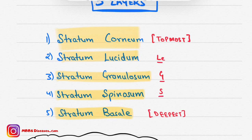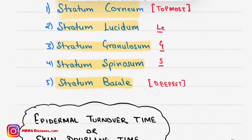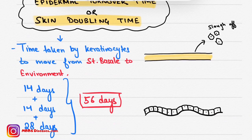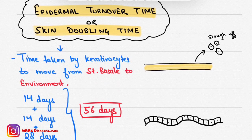Now coming to another part which is epidermal turnover time, also known as skin doubling time. Epidermal turnover time is the time taken by keratinocytes to move from stratum basale to the environment, or the sloughing time of keratinocytes from the stratum basale layer.